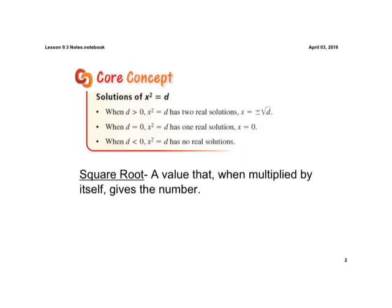Alright, there's one definition we want you to get down here, and that is the definition of a square root, which is a value that, when multiplied by itself, gives us that original number. So a value that, when multiplied by itself, gives us that number.